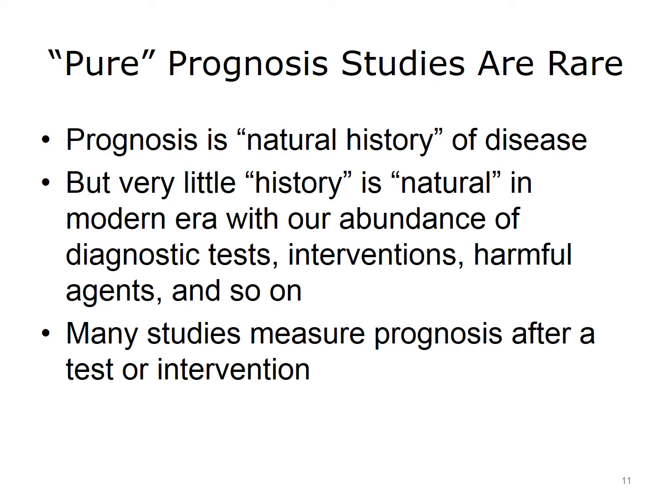We may measure prognosis for a group of patients who have been diagnosed with a certain condition, or we may measure prognosis for a group of individuals who have been given a certain treatment for a particular condition. When we start to do that, the differences between a prognosis study and a treatment study start to blur a little bit.